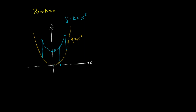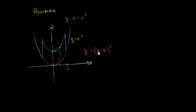Now let's think about shifting in the horizontal direction. What happens if y is equal to x minus h squared? When you just square 0, you get y equals 0. To get y equals 0 in the new curve, the quantity x minus h has to equal 0, so x has to equal h.